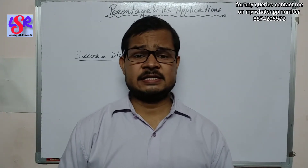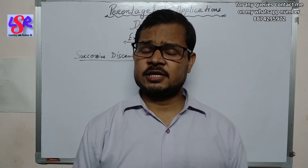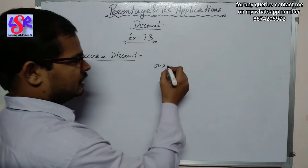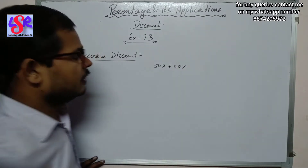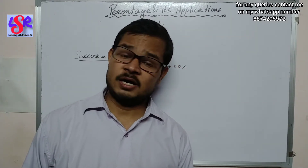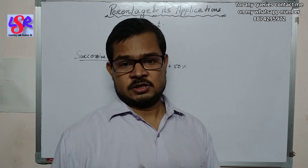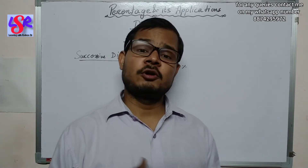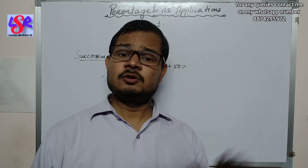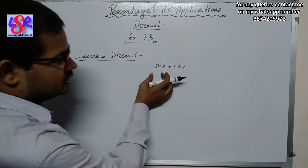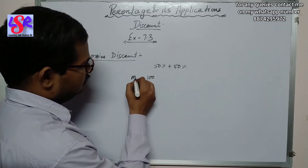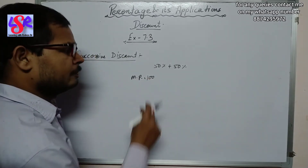Before the next questions, let's understand what successive discount means. In successive discount, you get one discount and then another discount on top of it. For example, a 50% discount followed by another 50% discount does NOT mean a 100% discount — 100% discount would mean the article is free of cost. Rather, the second 50% is applied to the already-discounted price.